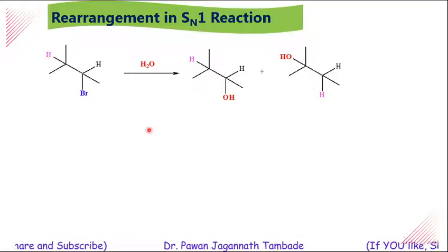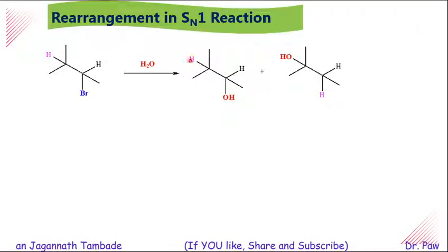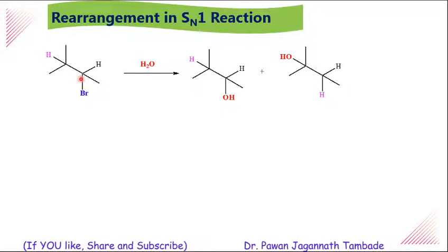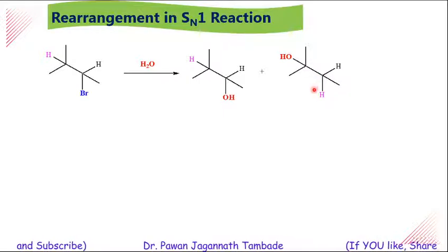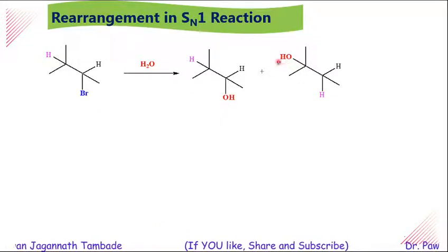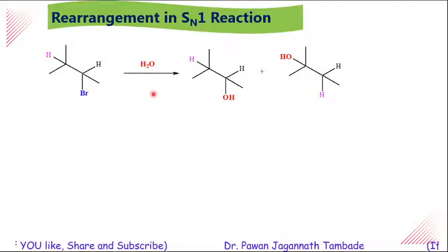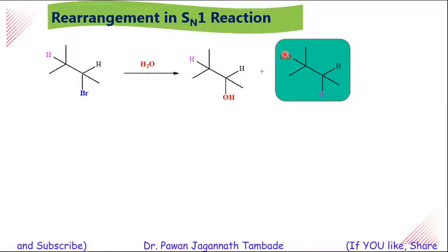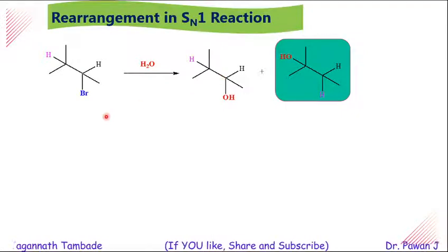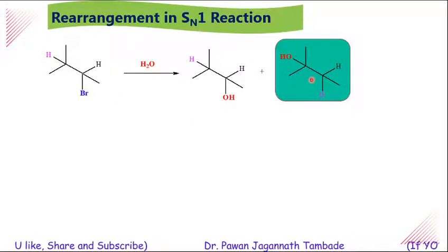Look at this second example. If this alkyl halide is allowed to react with water, we are expecting this compound as a product where Br is replaced by OH — simply a nucleophilic substitution reaction. However, if you look at another product obtained in this reaction, the nucleophile is present on an adjacent carbon atom and there is a migration of a hydrogen from one carbon to the other, giving this product. When these reactions are explored, it is observed that the quantity of this rearranged product is more — it is the major product, and the direct substitution product is the minor product.